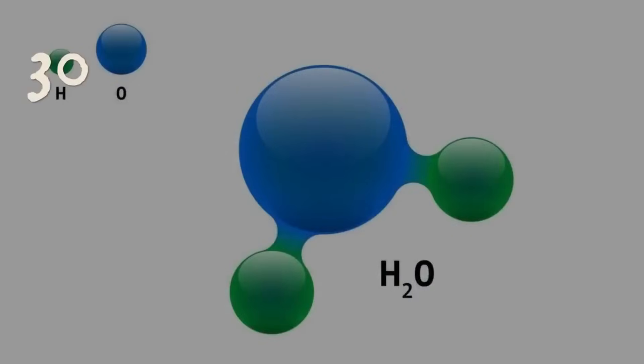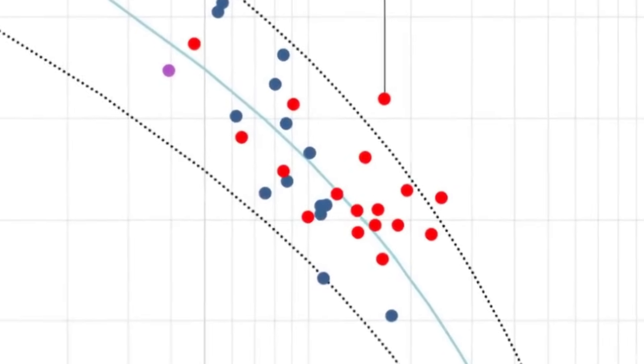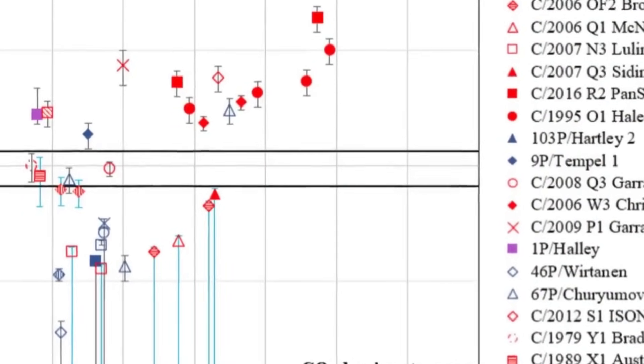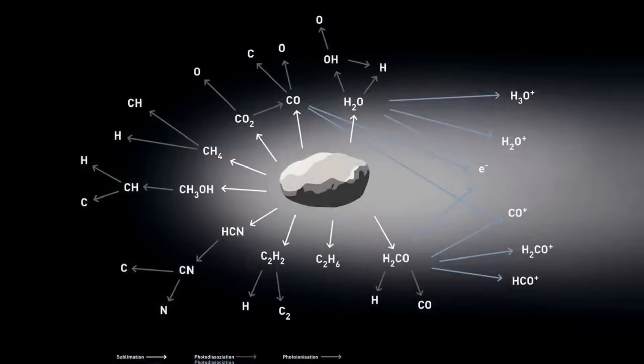The sun's heat starts to warm up the comet's surface, and all those frozen gases that have been locked away for so long begin to turn into vapor. It's like watching dry ice create fog, except this is happening on a scale so massive that we can see it from millions of miles away. This process creates the beautiful glowing cloud around the comet and the spectacular tail that always points away from the sun.